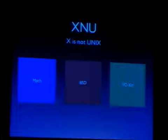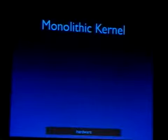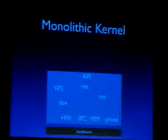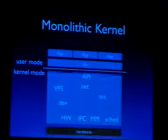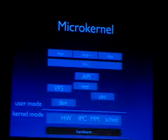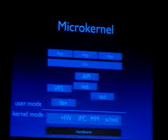Mach was originally a research project at Carnegie Mellon University, started in 1985. Mach is a microkernel project. In traditional monolithic kernels like Unix, BSD, and Linux, components run in kernel mode — the file system framework, security components, network stack, and device drivers — alongside the parts that really need to be in kernel mode. On a microkernel, the kernel-user boundary is moved down, so only the scheduler, memory manager, inter-process communication, and low-level hardware access run in kernel mode.